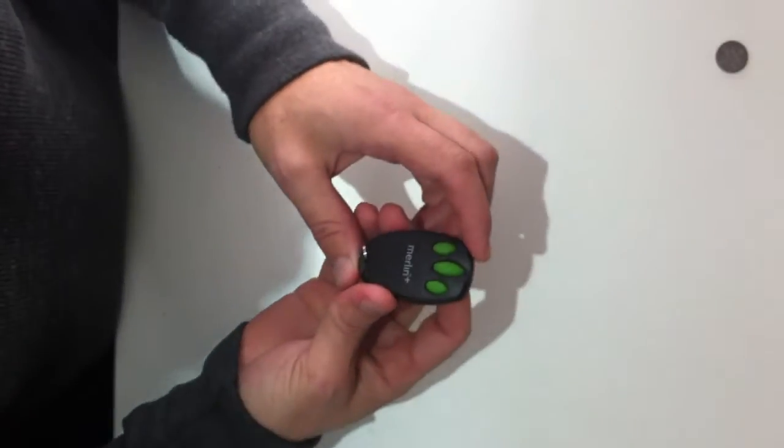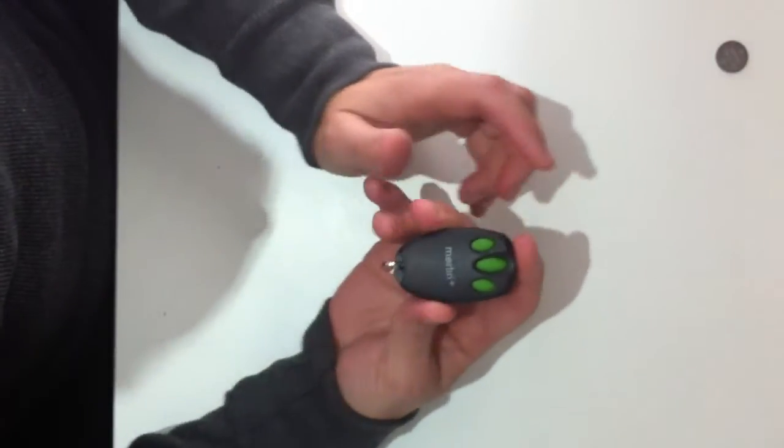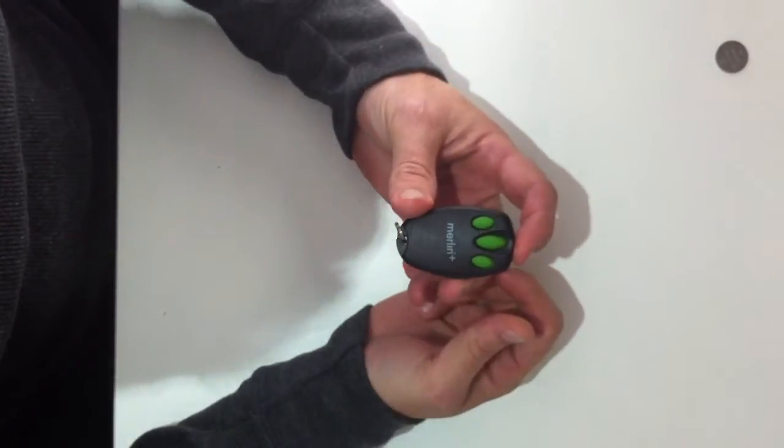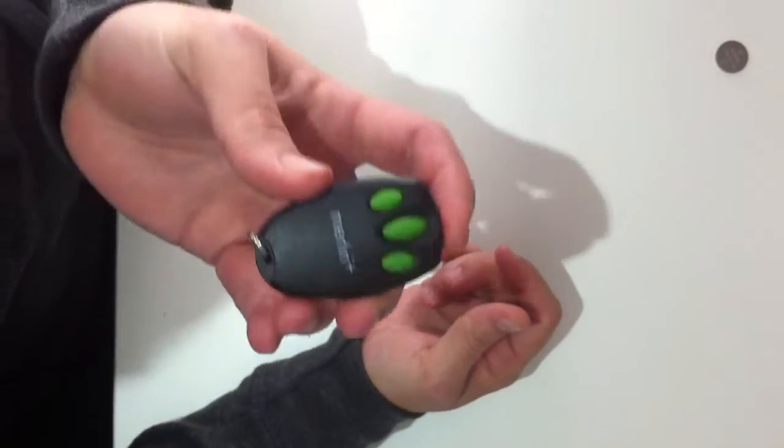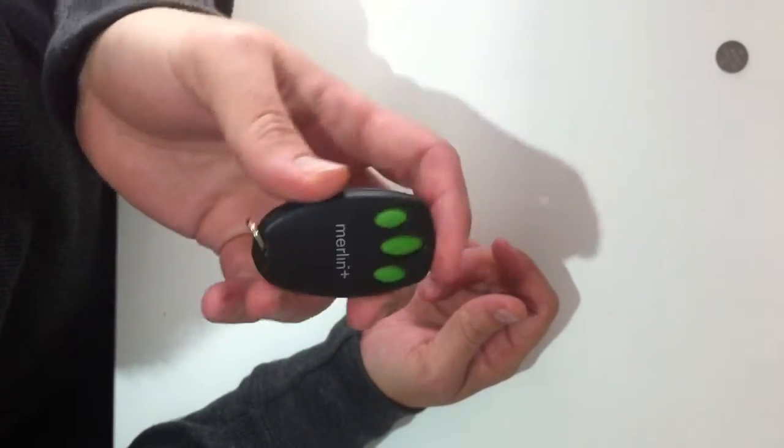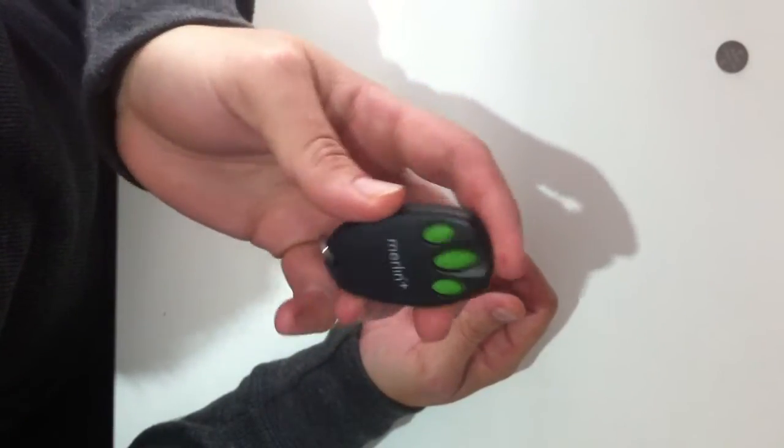Hi, it's Ryan from DoorsDirect again. Today we're going to be talking about how to change the battery in your Merlin remote. Now there are a couple of different Merlin remotes. The one I have is the Bear Claw or C945, which is pretty common over the last few years with Merlin openers.